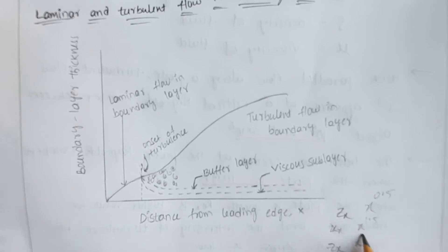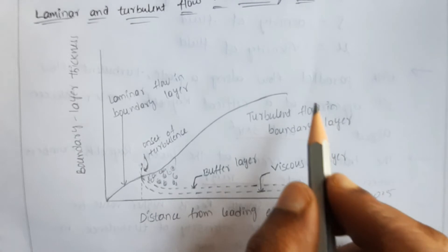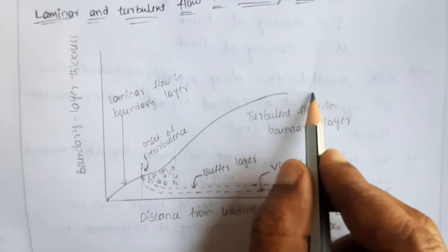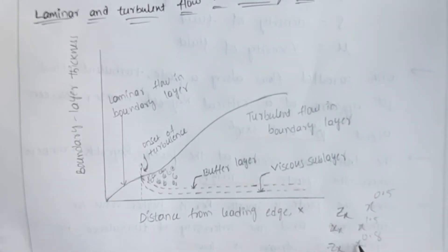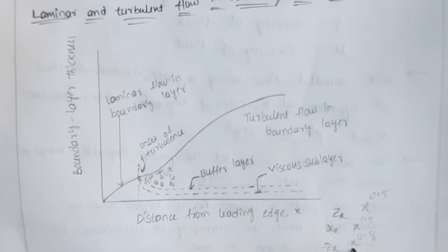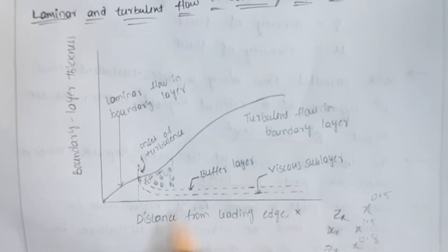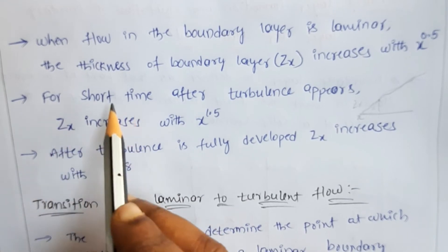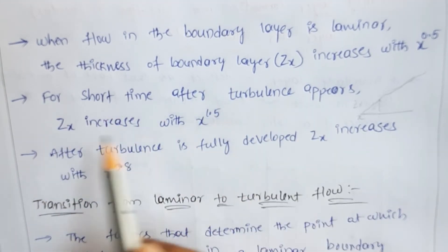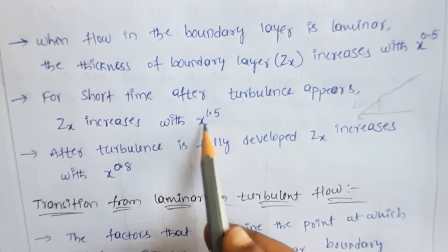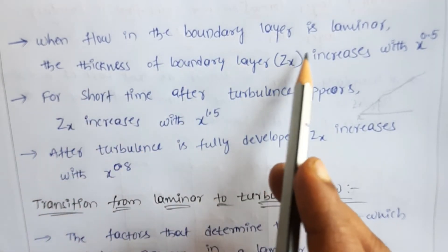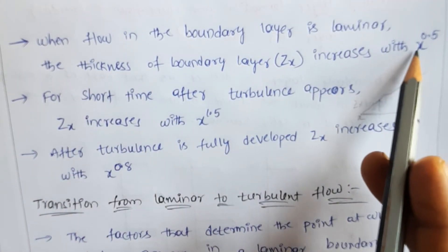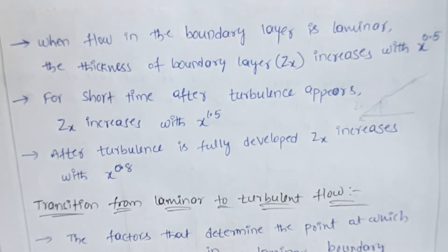Once turbulence is completely developed, δX varies as X^0.8 — the variation becomes less rapid. So in summary: in the laminar region δX increases as X^0.5; at a short time after turbulence appearance δX increases as X^1.5; and after turbulence is fully developed δX increases as X^0.8, where X is the distance from the leading edge of the plate.